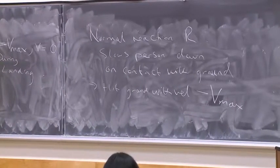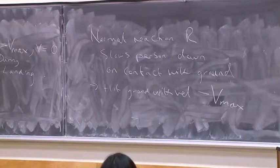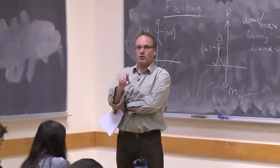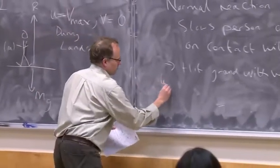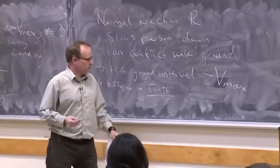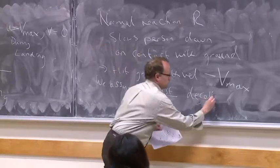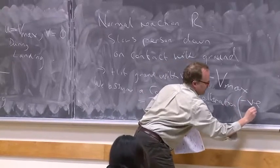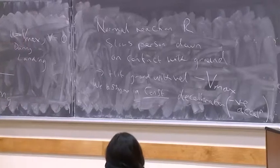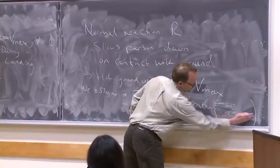And we assume in all our calculations there's a constant deceleration. The reason we assume a constant deceleration is because we want to use the equations of motion. V equals u plus at, S equals ut plus a half at squared, V squared minus u squared is 2as. To use those equations we have to have a constant deceleration. So we always assume a constant deceleration. But the acceleration would be upwards. I don't want to confuse you with the sign.